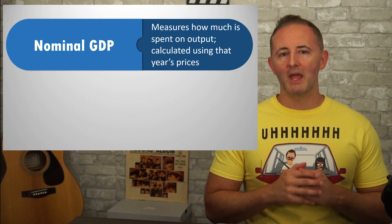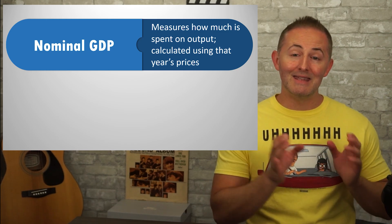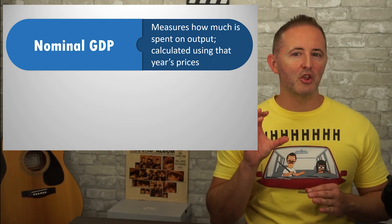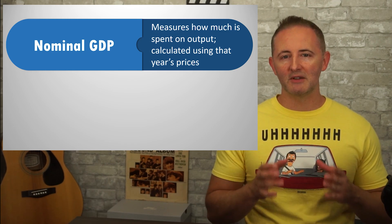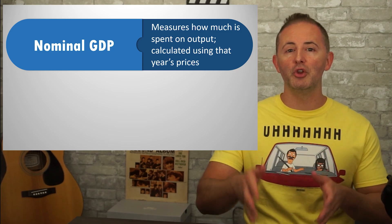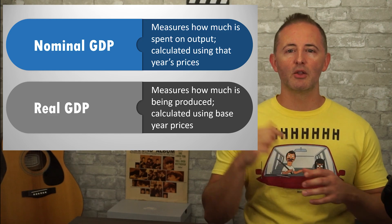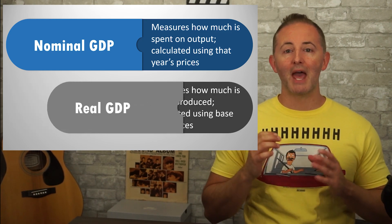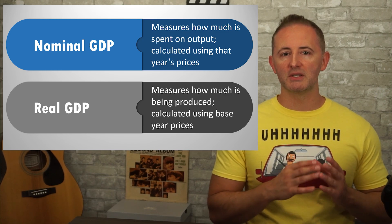The main nominal and real variables this module is concerned with are nominal and real GDP. Nominal GDP is a measure of how much is spent on output and is calculated using the given year's prices. This leads to an obvious problem — if all I tell you is that nominal GDP rose, you don't know why it rose. It could be that the economy produced more stuff, or it could be that prices went up, or it might be a little bit of each. Since the purpose of GDP is to measure the value of goods produced in an economy, nominal GDP can be distorted by inflation, making it not very useful to economists. Real GDP measures how much is being produced and is calculated using the prices of a base year. This way, it controls for the changes in price by ignoring them.